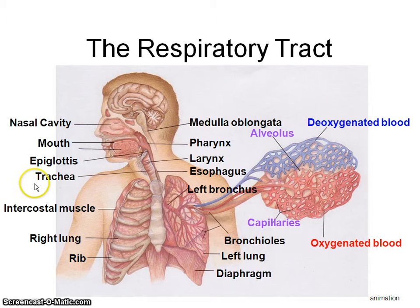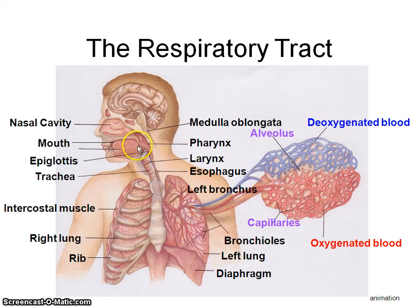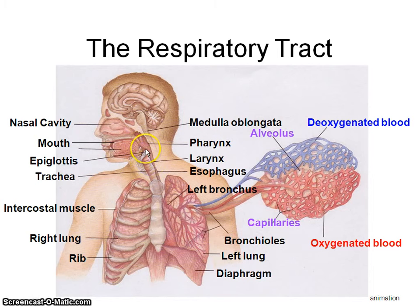This is the respiratory tract. When you breathe, you breathe in through your nasal cavity or through your mouth cavity. The air comes down into a space called the pharynx — that's where if you swallowed pop and coughed it could come out through your nose. Things can go down through your esophagus, your food tube, or down through your breathing tube, your trachea. There's a special part called the epiglottis, a flap that covers and protects your trachea and prevents food from going down there.